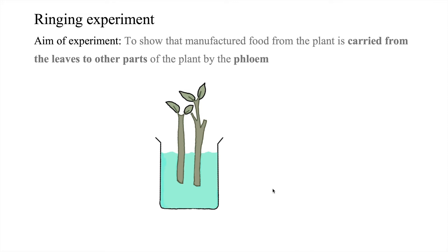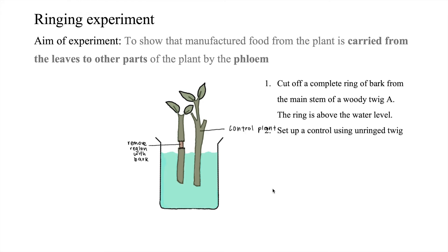So first, we will cut off a complete ring from the bark of the main stem of the woody twig. Make sure that the ring is above the water level. Next, we will set up a control using the unringed twig.